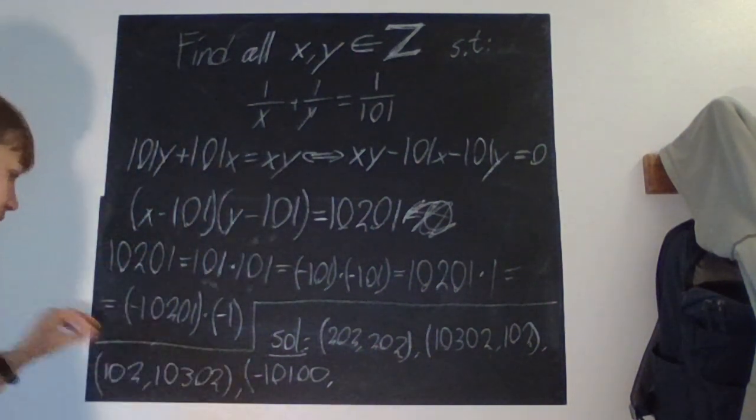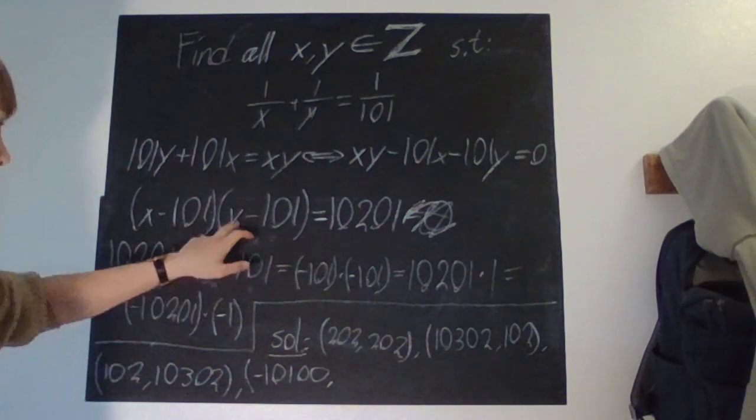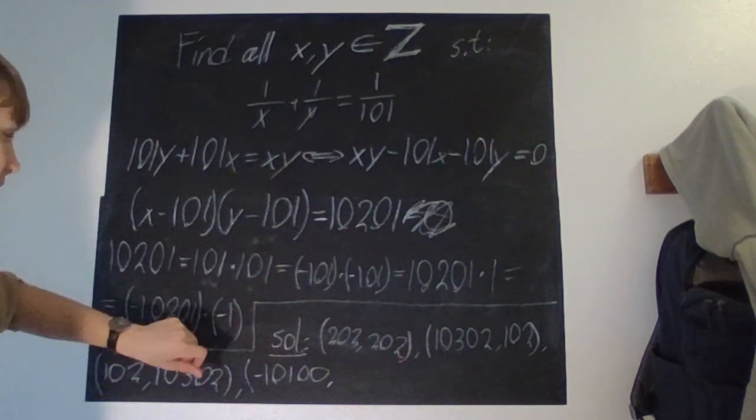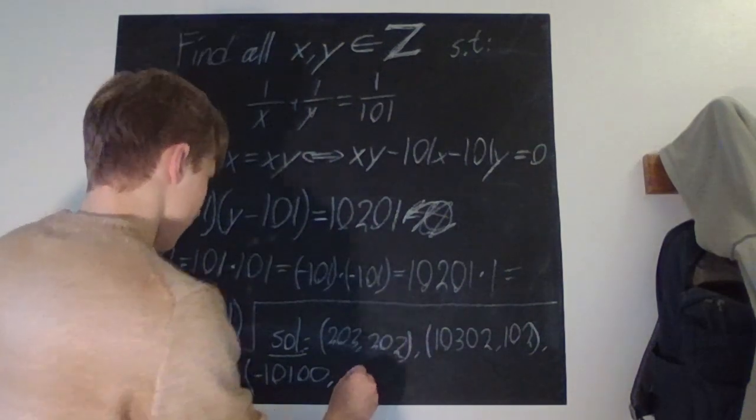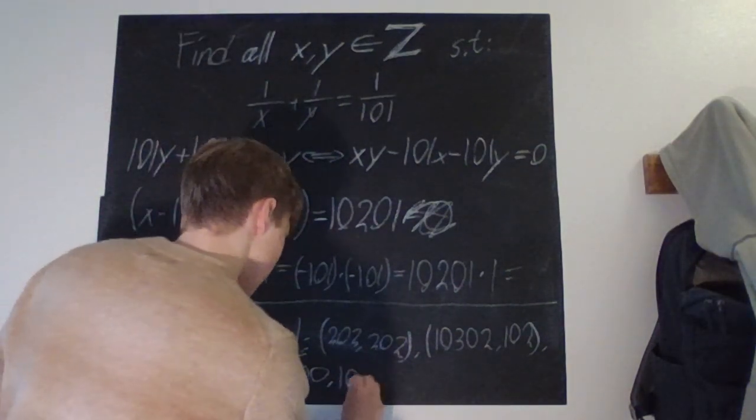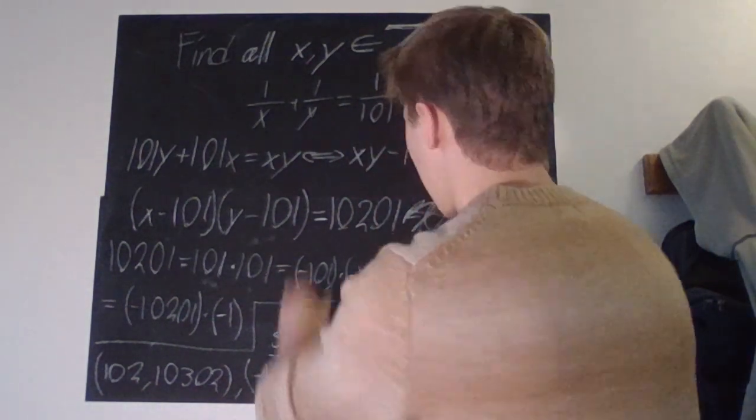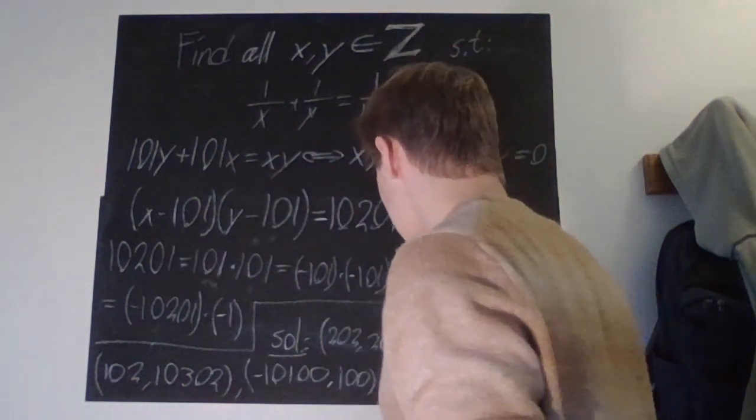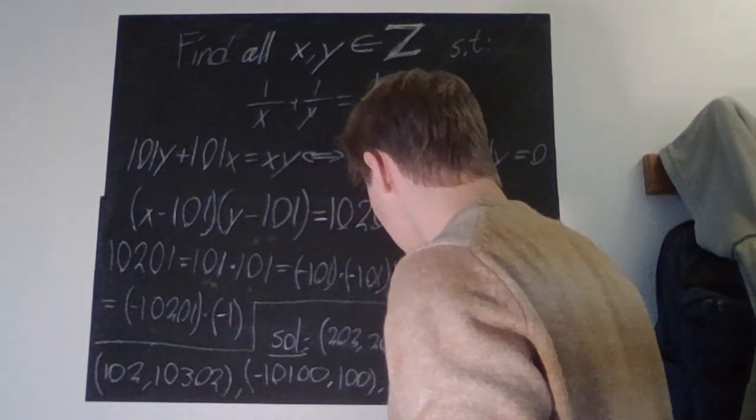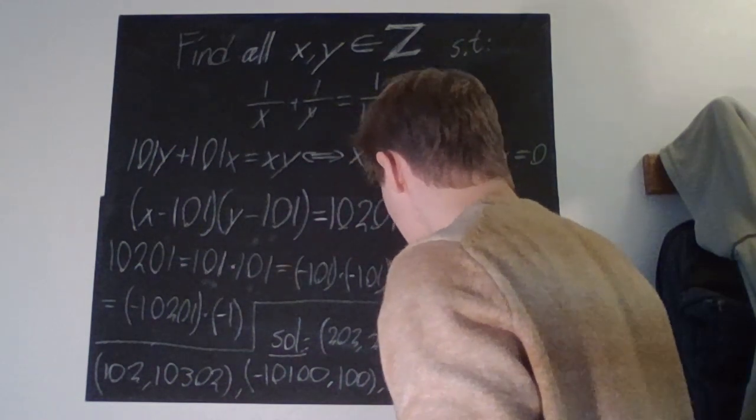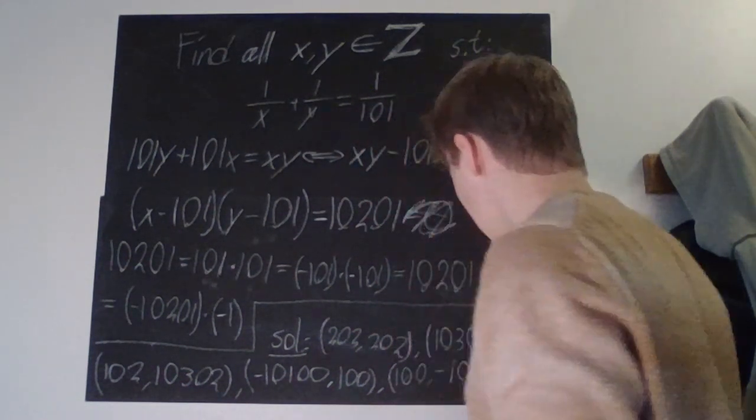And if y - 101 is supposed to be -1, then we have that y is 100. And again, we can flip this so that x is equal to y and the reverse. So, 100 and -10100.